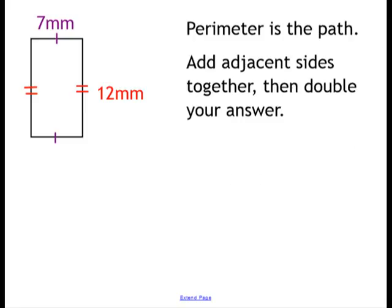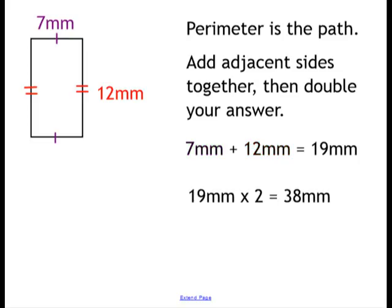So the perimeter is the path. Add adjacent sides together, then double your answer. So 7 plus 12 is 19mm. 19mm times 2 is 38mm.